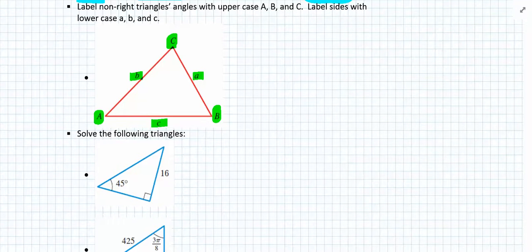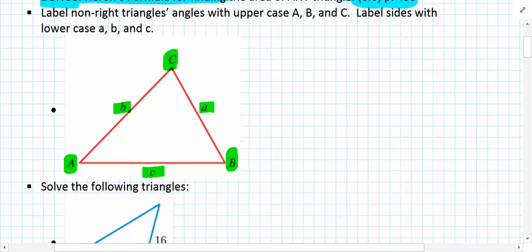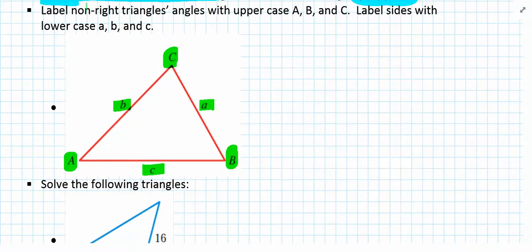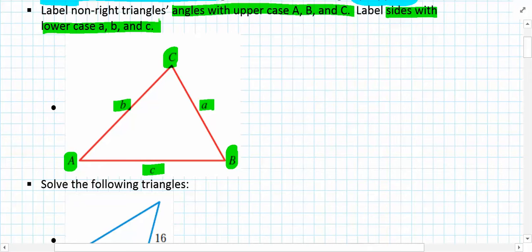Moving forward, we must recognize that we have to label non-right triangles consistently. All triangles, whether right triangles or not, we need to label their angles with uppercase letters and their sides with lowercase letters. If we get in the habit of following the same pattern, it makes our discussion of these triangles more clear.